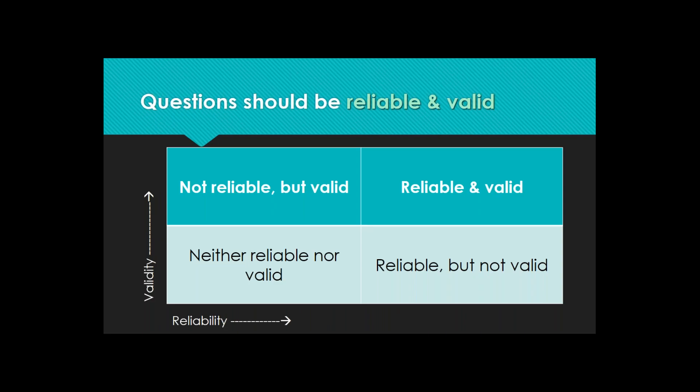When thinking about validity and reliability, we're shooting for questions that fit into the upper right-hand quadrant. We don't want questions that are valid but nobody answers the same way, or reliable but not related to what we want to find out. And of course, neither reliable nor valid is just a bad question.